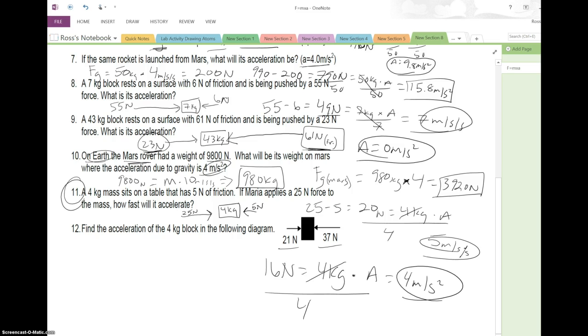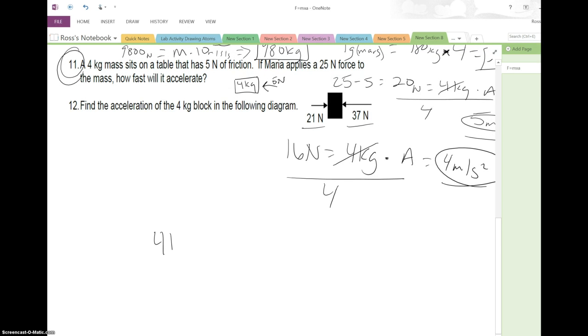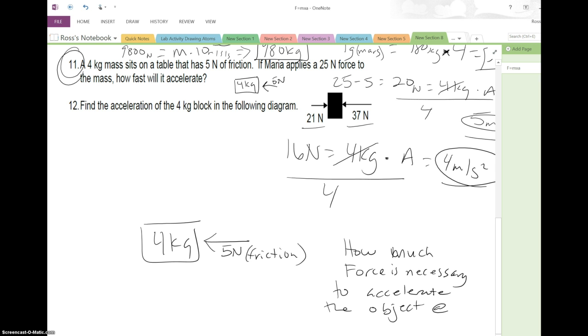So let's take number 11 as this example. So let's say we get rid of that, right? And it says, okay, we've got a 4 kilogram mass. There's 5 newtons of friction. So let's draw this again down here. Let's open up this page a little bit. Let's say we've got a 4 kilogram mass. We've got 5 newtons of friction. And let's say the question would be, how much force is necessary to accelerate the object at, let's just make it easy, 5 meters per second squared.